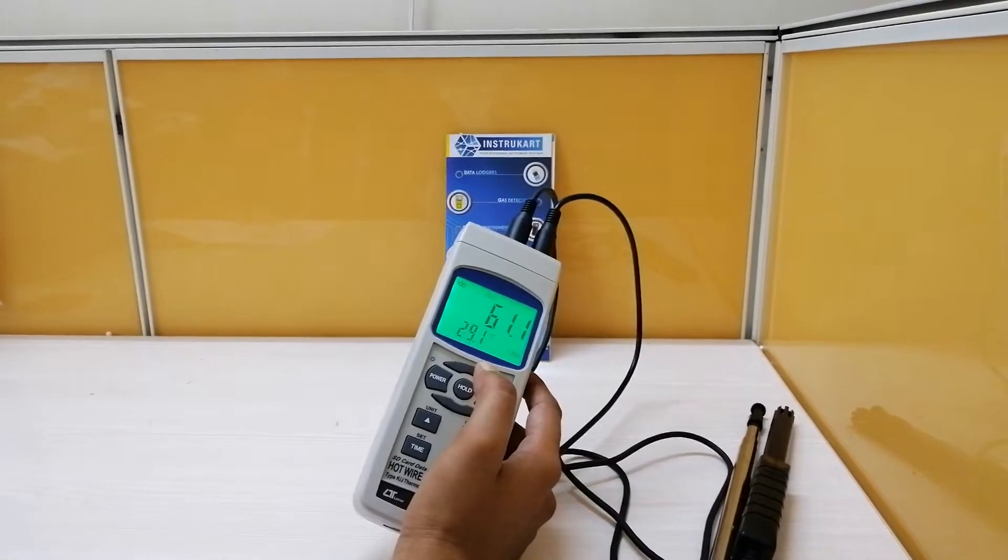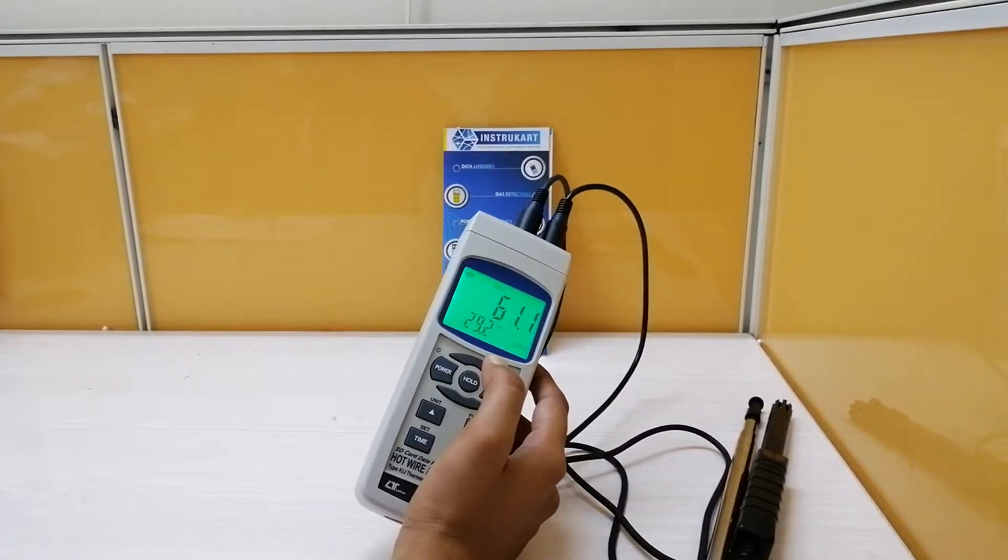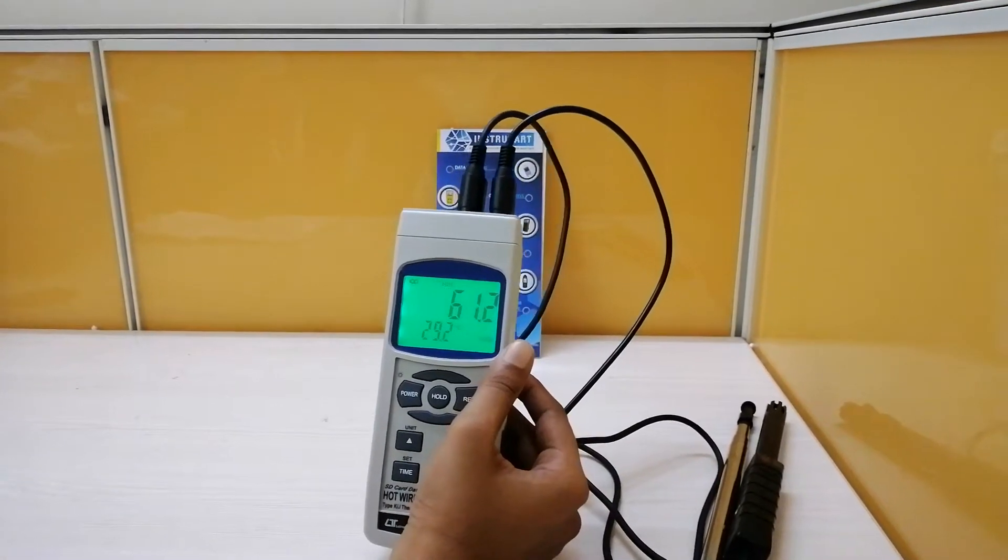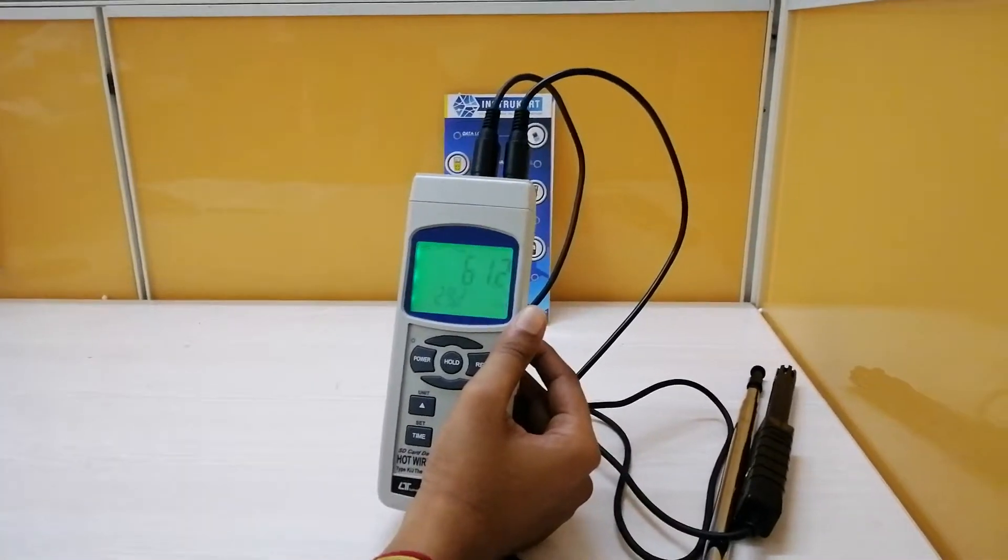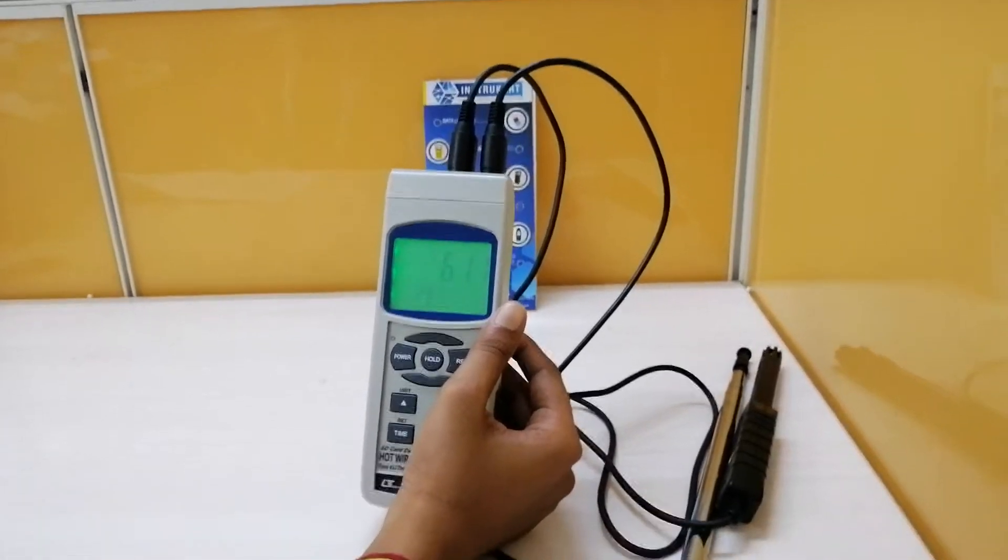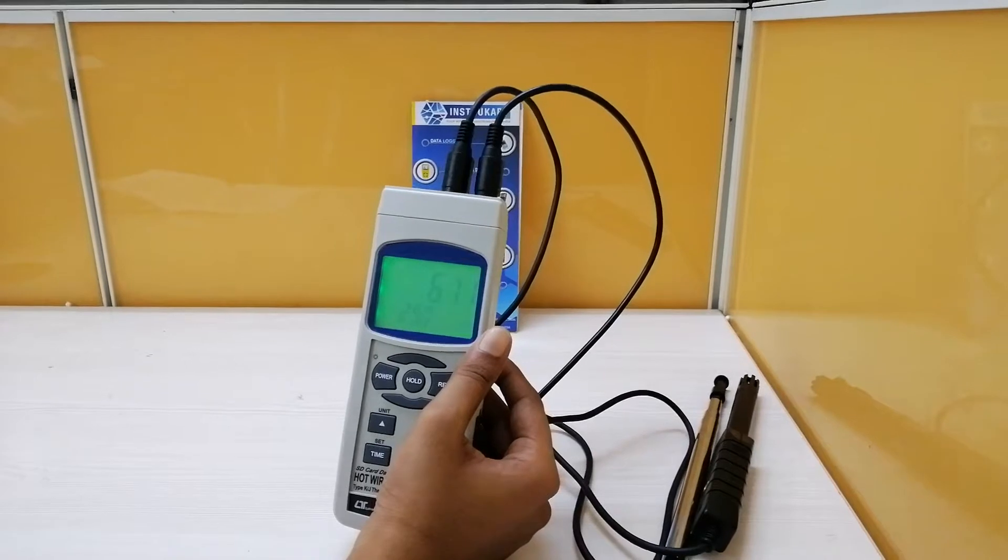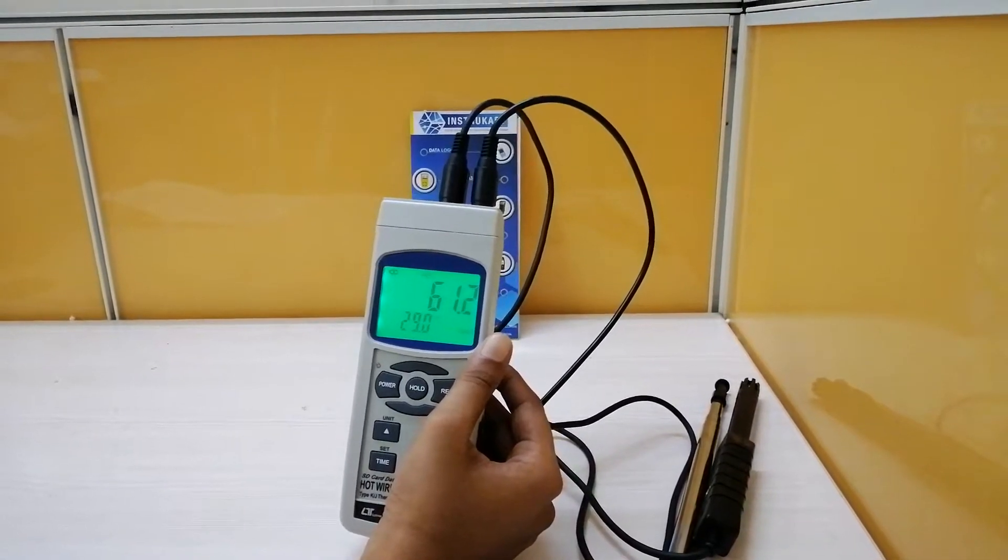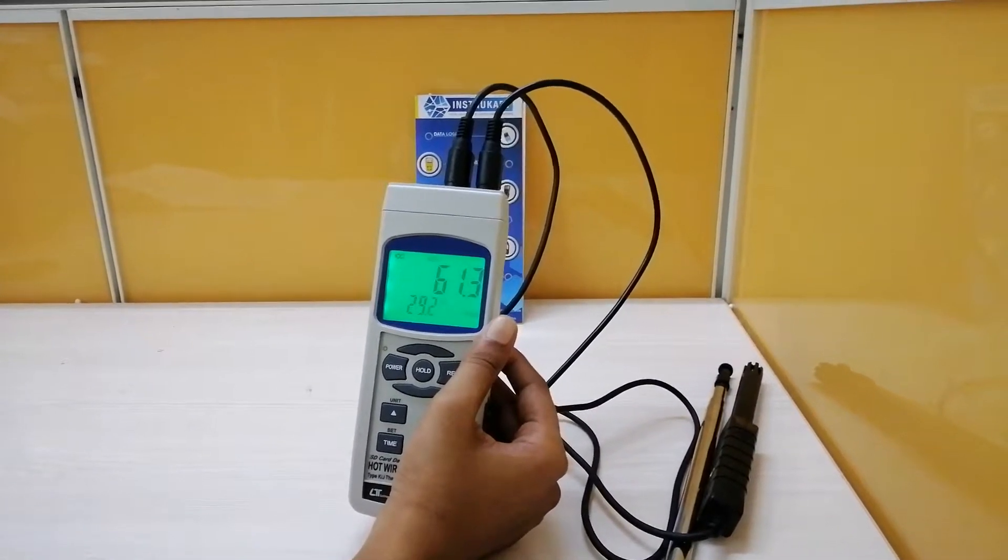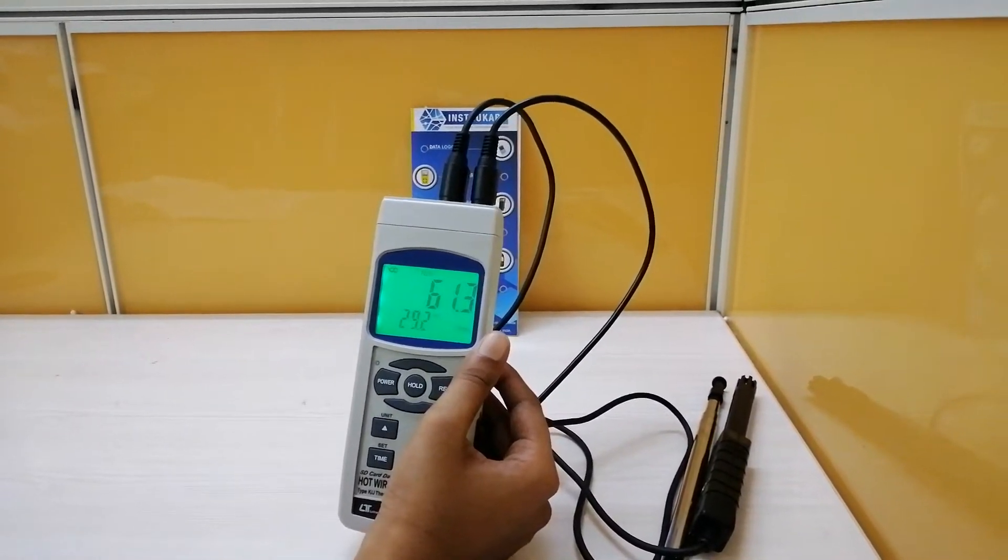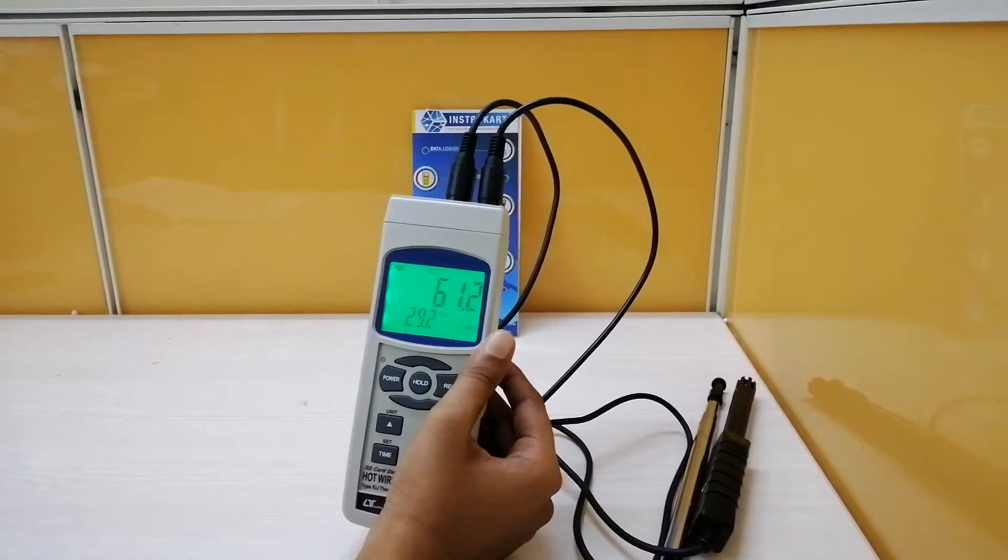It can measure the air velocity in meters per second, kilometer per hour, miles per hour, knots, feet per minute. It has a range of 0.2 to 5.0 meters per second with a resolution of 0.01 meters per second. It can also measure in kilometer per hour with a range of 0.7 to 18 kilometer per hour with a resolution of 0.01 kilometer per hour.